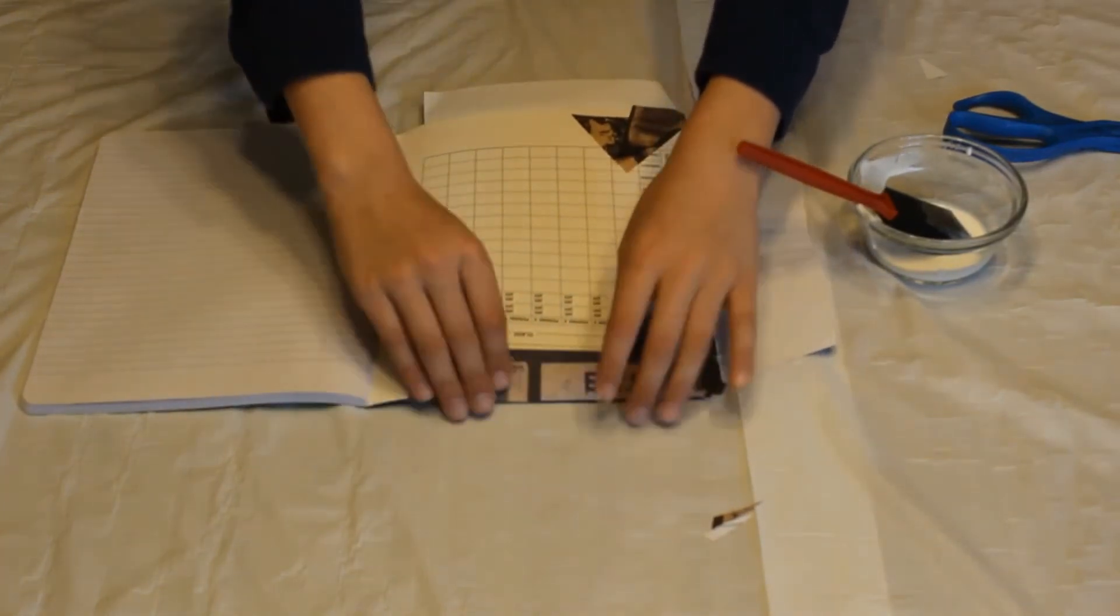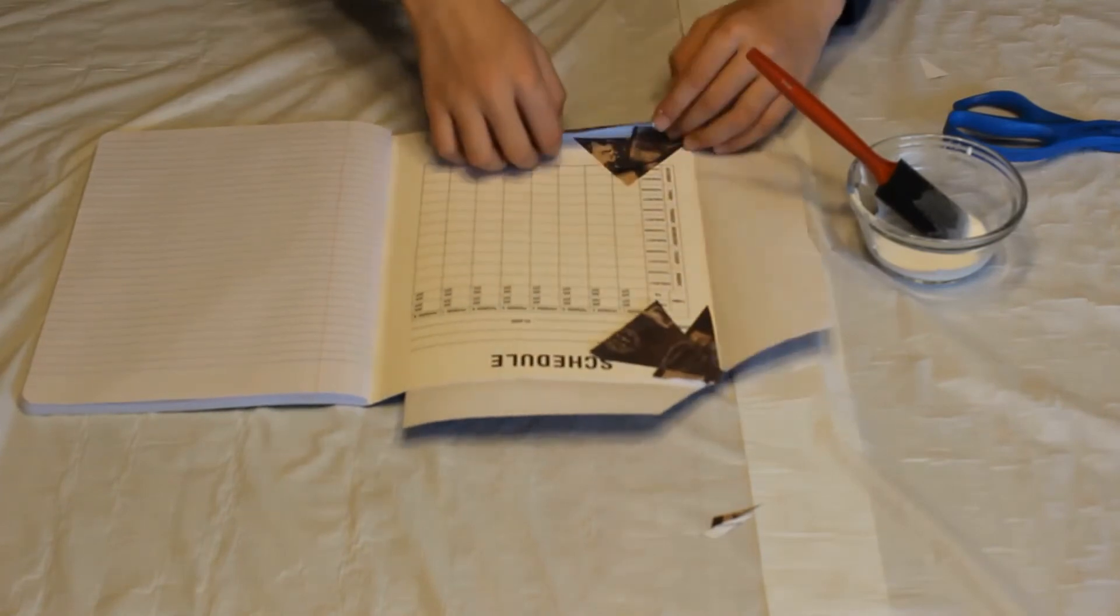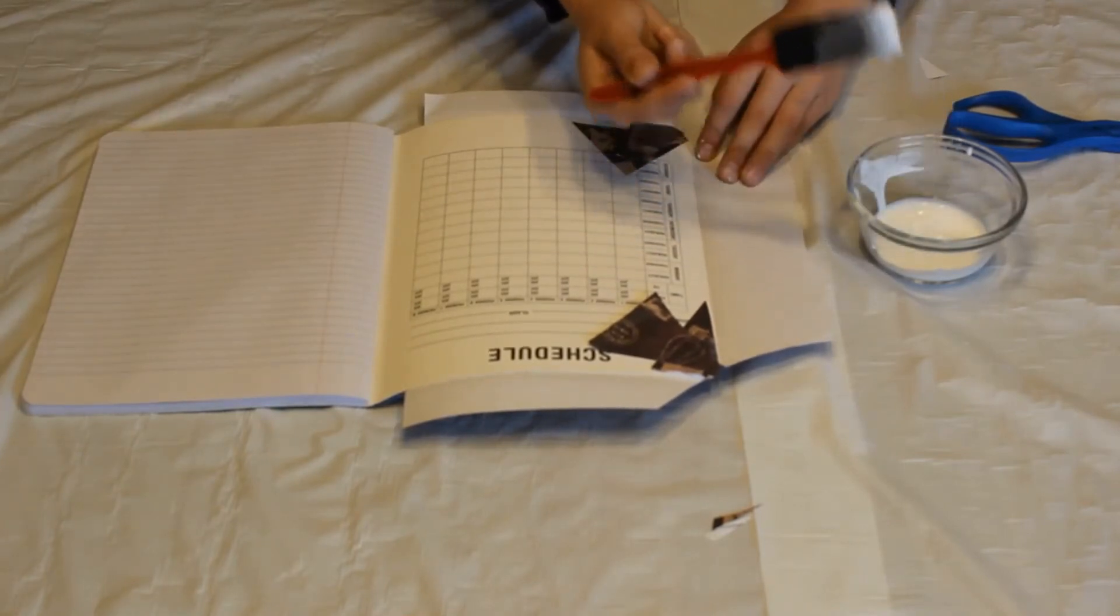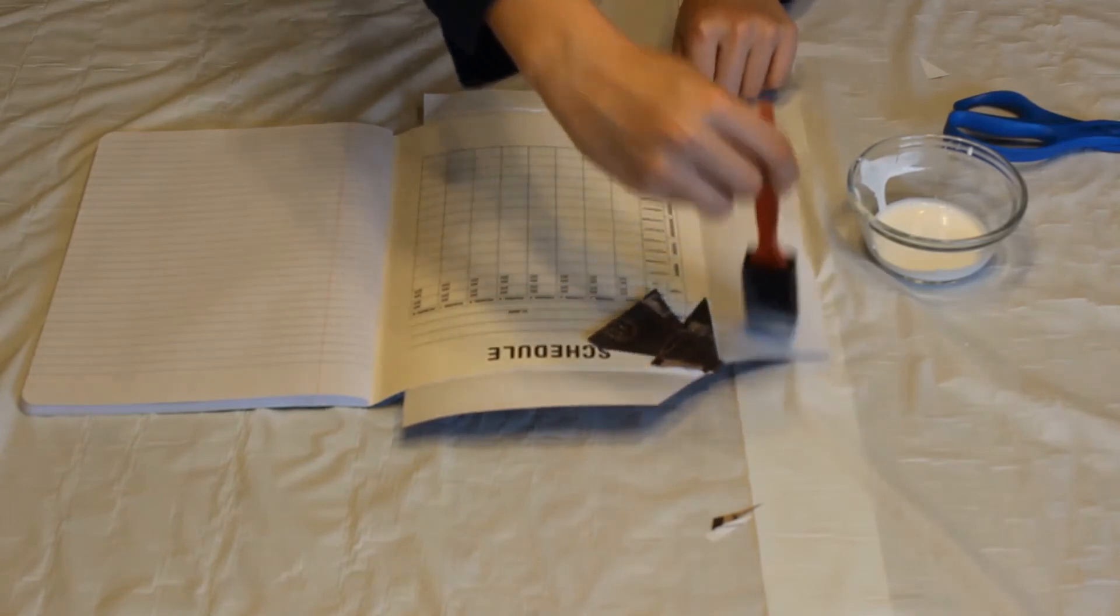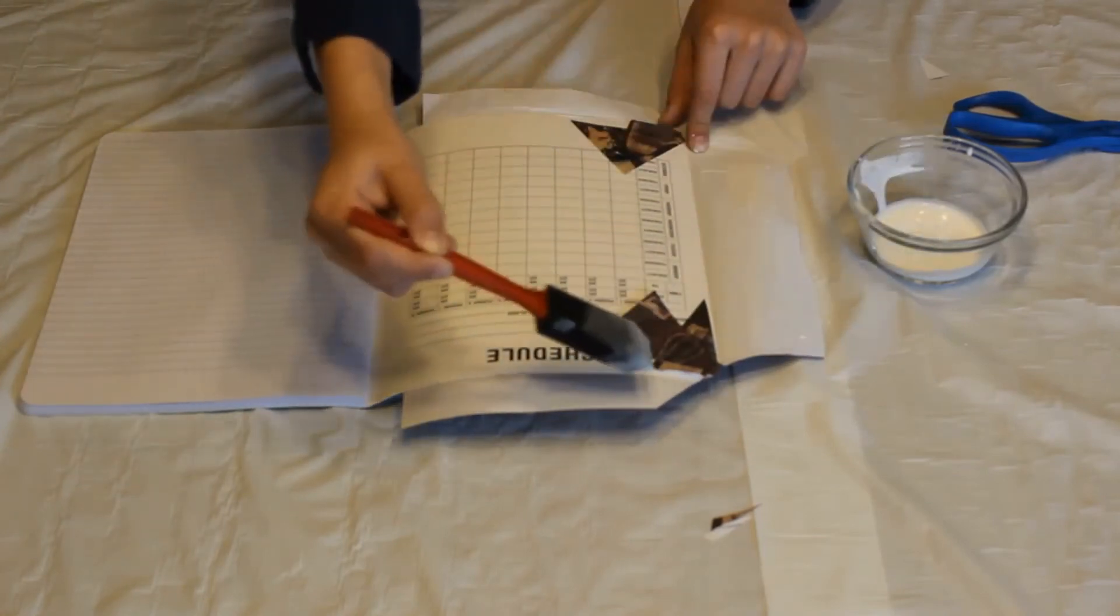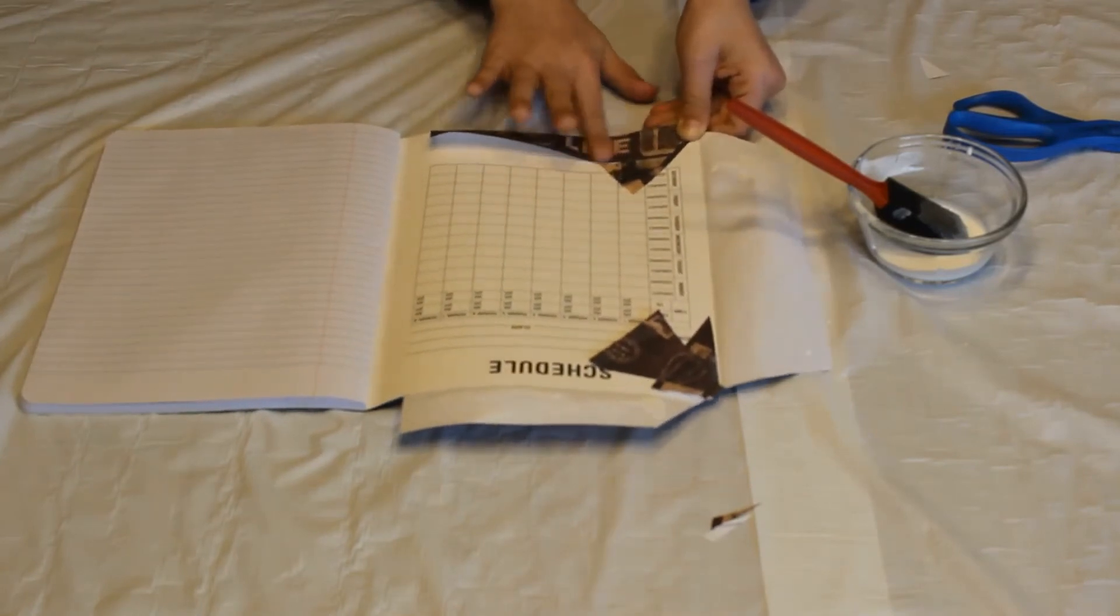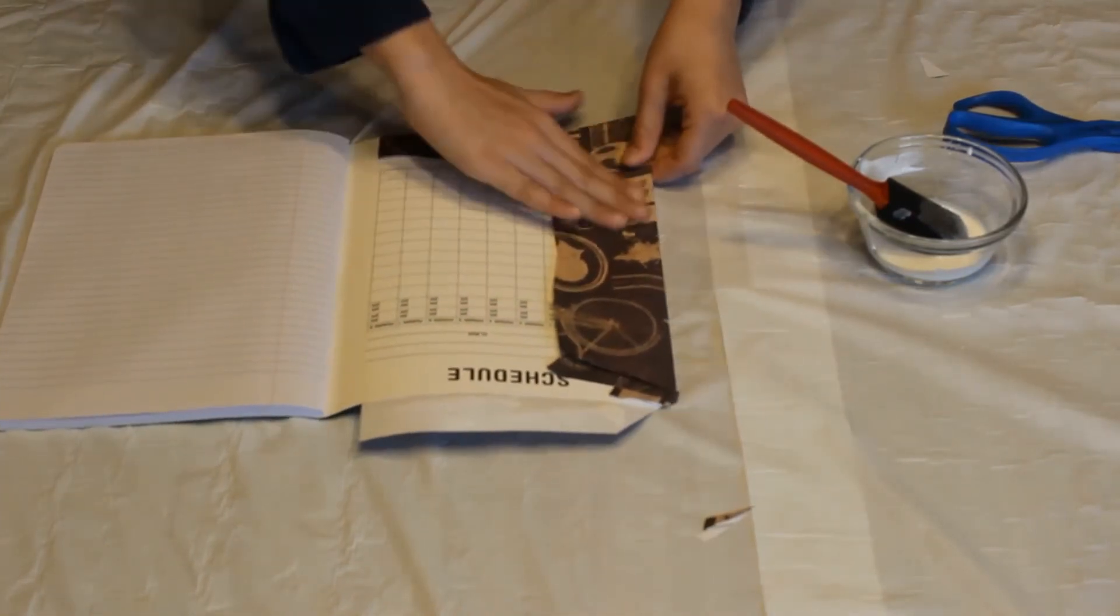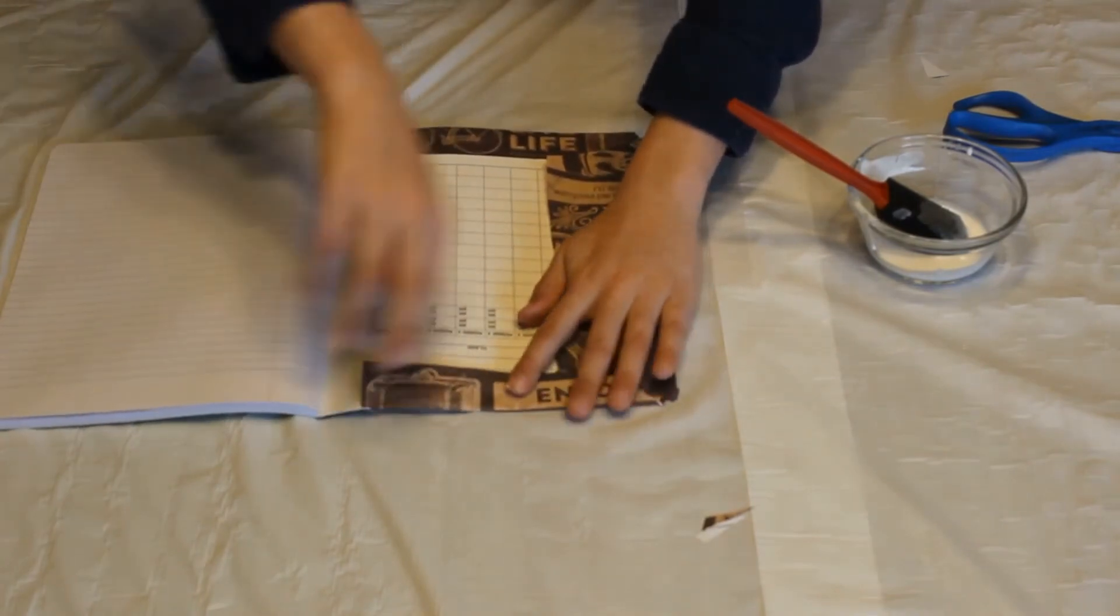You want to pre-fold these, like this, before you put any glue on it. So you fold them, and then you're going to fold this big one, and then this little one. Then put some mod podge on it, and fold them down. Fold this one down, and then fold this one down. And that's it.